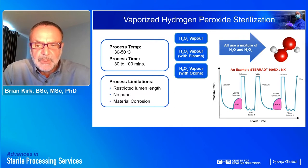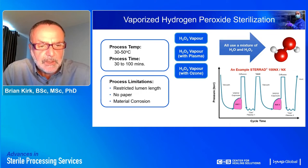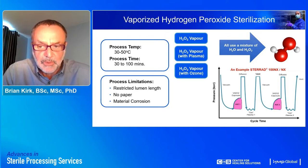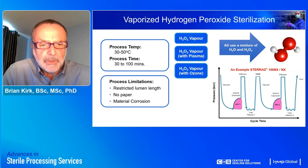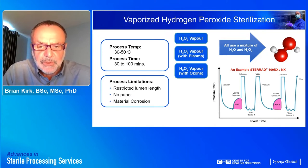These hydrogen peroxide processes have limitations such as restrictions on the length and width of lumened instruments that can be sterilized, and some packaging will inactivate the hydrogen peroxide vapor — so cellulosic materials should be excluded and more specialized packaging such as Tyvek-type is recommended. Plasma can be used either at the end of the exposure stage to inactivate hydrogen peroxide and make emissions non-toxic, or at the beginning to preheat the load prior to introduction of the vapor.